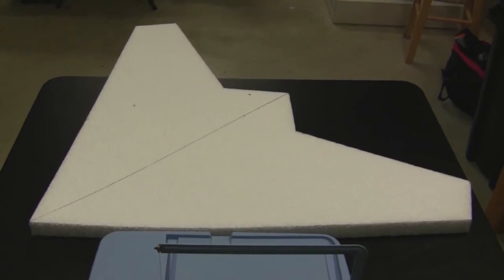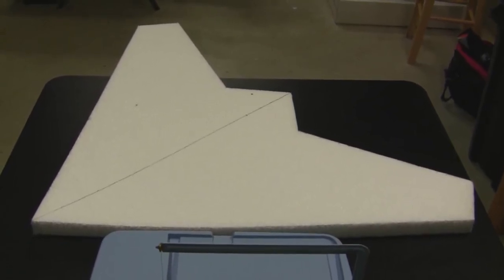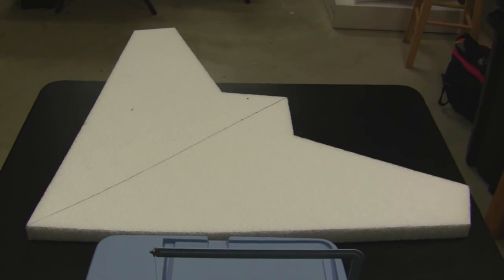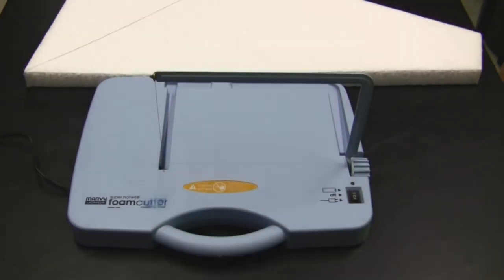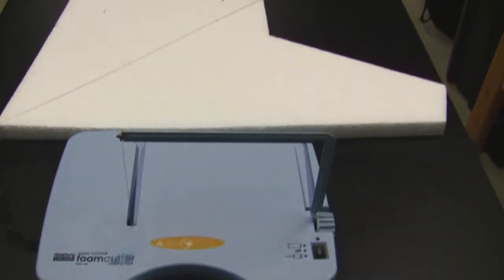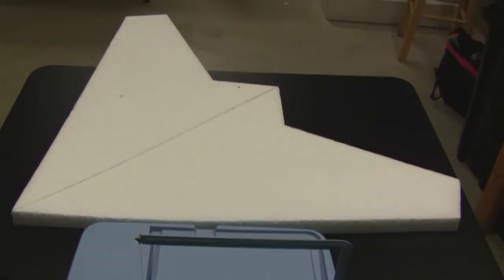As you can see, this small portable tabletop hot wire does a good job of cutting out foam. It is definitely a useful tool to have if you're getting into scratch building RC planes.